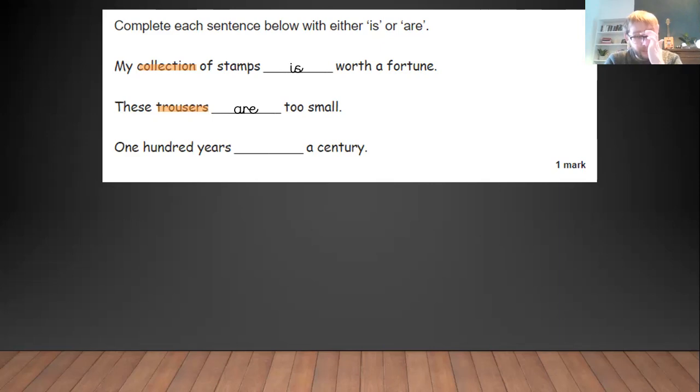Now the last one's a funny one because you feel like 100 years, there's lots of them. There's a hundred of them in fact. However, it's the 100 years. We're lumping them together as a century. 100 years, just one of them. So it's is. 100 years is a century. So remember the rule: is for singular, are for plural.